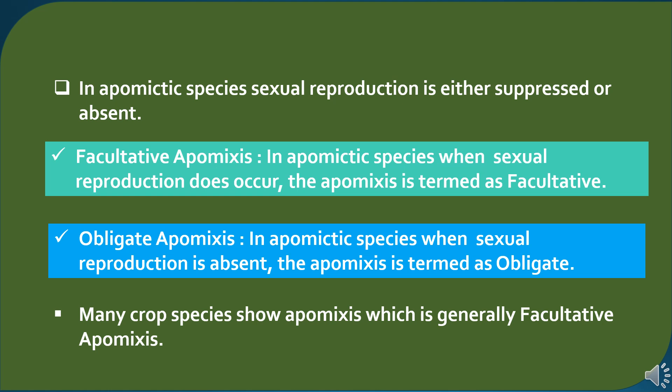In apomixis, the apomictic species utilize suppressed or absent sexual reproduction. On the basis of sexual reproduction, apomixis is divided into two categories: first is facultative apomixis, where sexual reproduction takes place in apomictic species, and second is obligate apomixis, where sexual reproduction is absent in apomictic species.